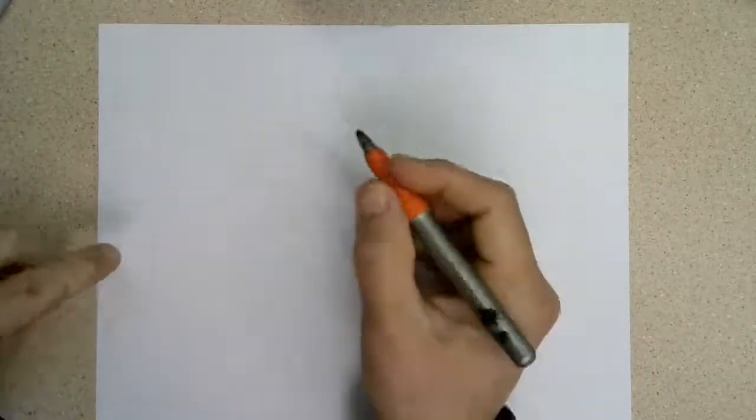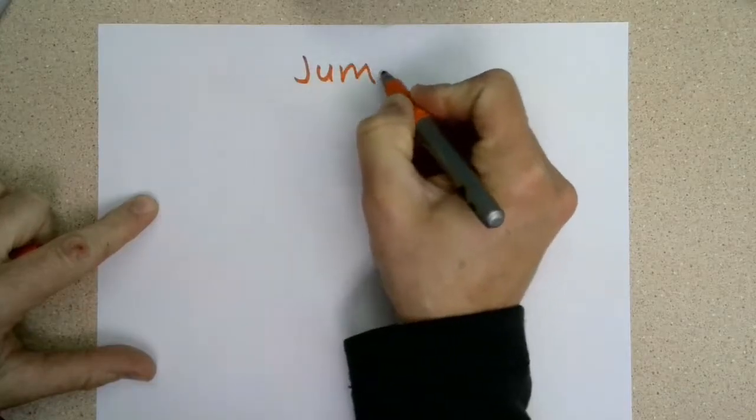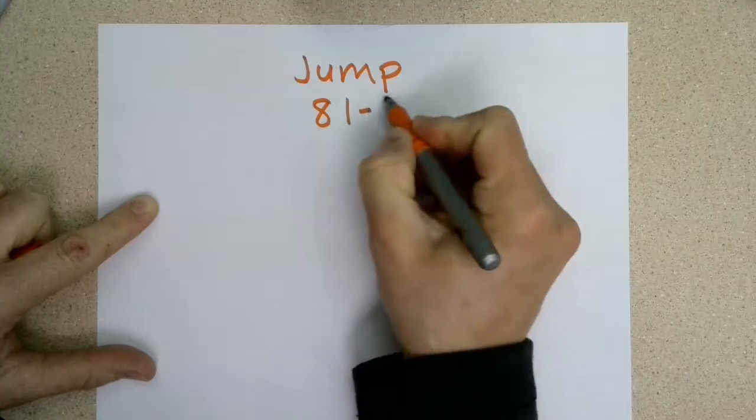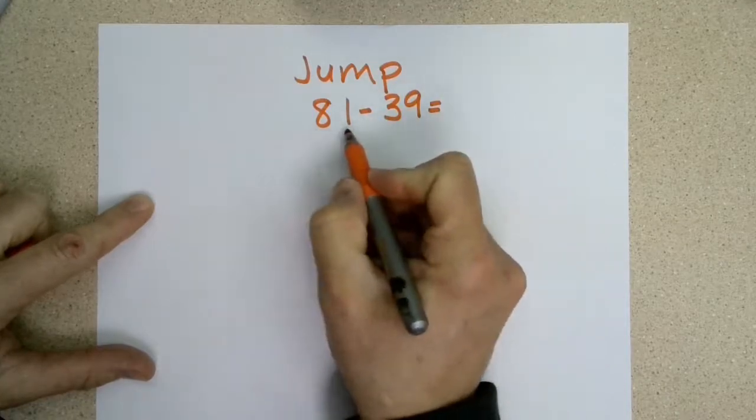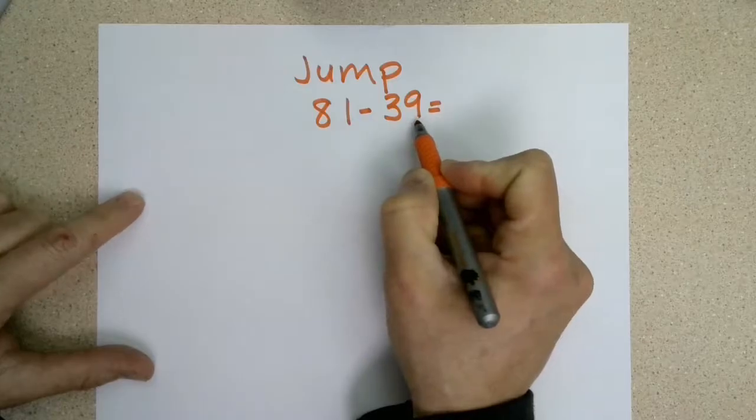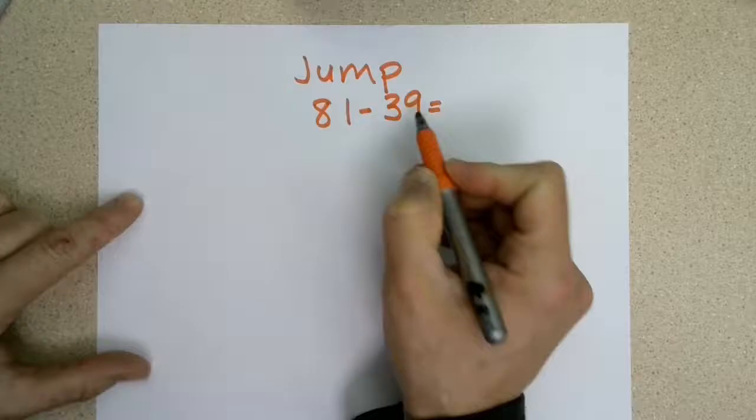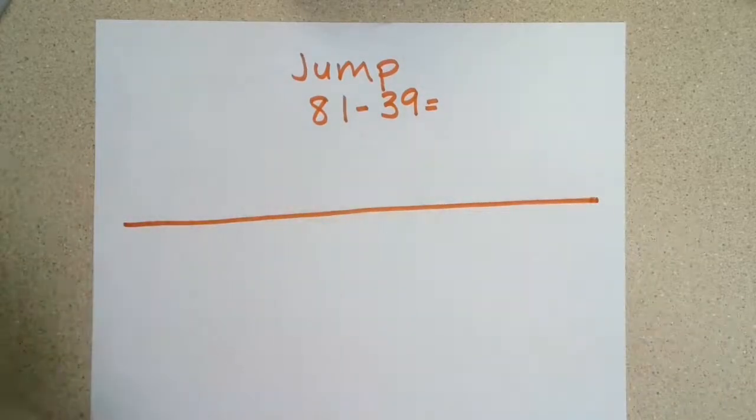The next problem I'm going to use the jump strategy for is 81 minus 39. When I look at this problem, I know that I have 81 and I'm removing or subtracting 39. If I only have one in 81, I can't take nine away, so this is a great problem to use a number line strategy and the jump strategy.